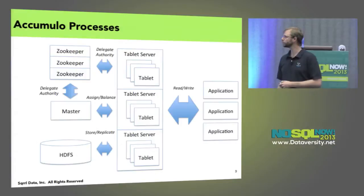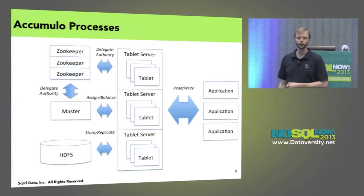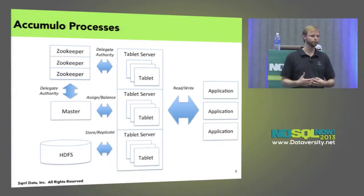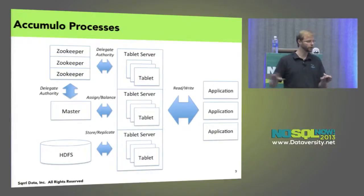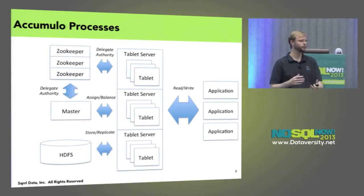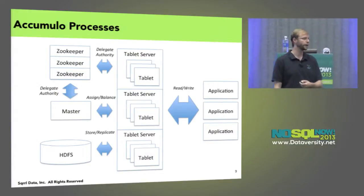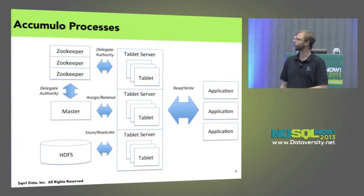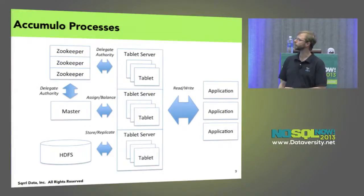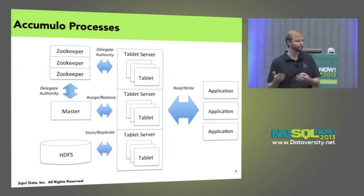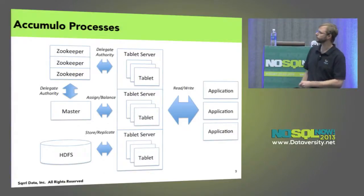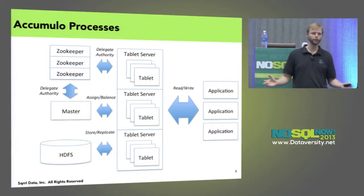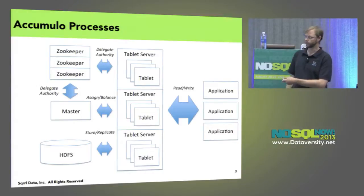From a process perspective, we can take those tablets and distribute them across tablet servers. A given tablet server will host a subset of the tablets. Clients — our applications — read and write directly to the tablet servers. It's a shared-nothing architecture where you don't have to go through a single point for all interaction. Instead, you go directly to the machine responsible for hosting the data. Background processes manage data, manage availability, balance load, assign and delegate authority through distributed locks in ZooKeeper. We've scaled these up to thousands of nodes, and it scales up nicely with good parallel performance.